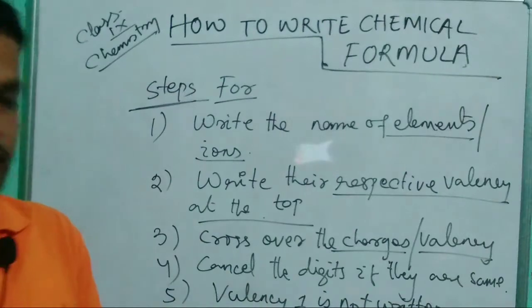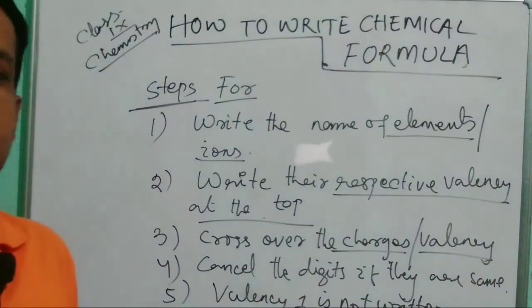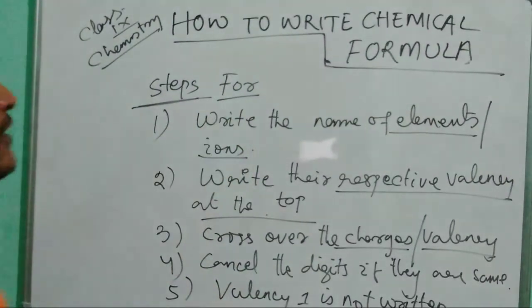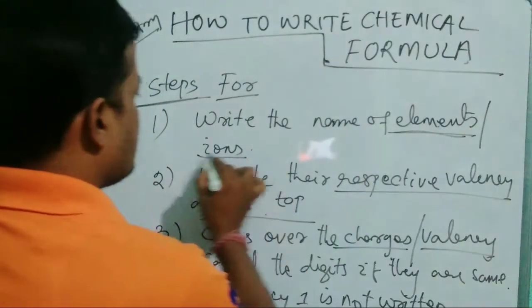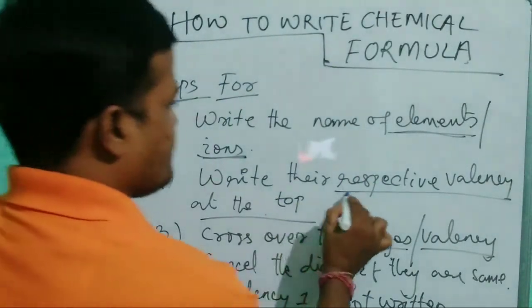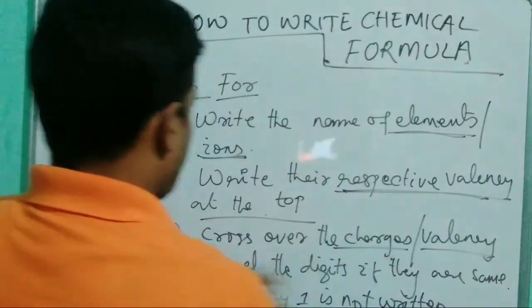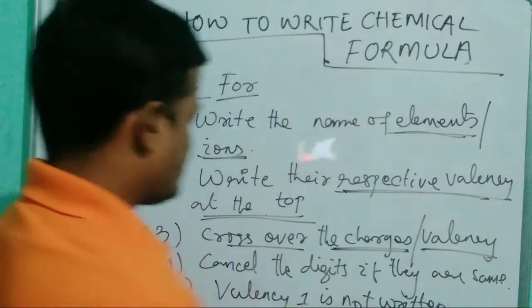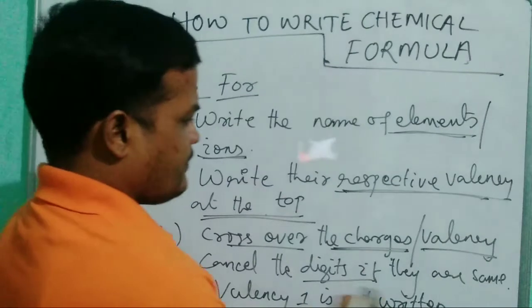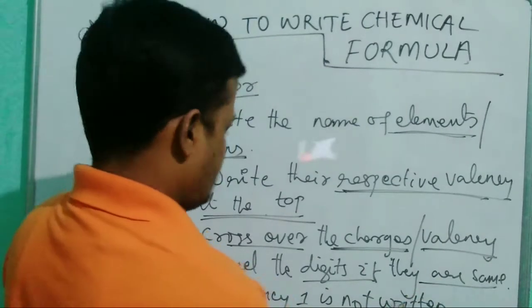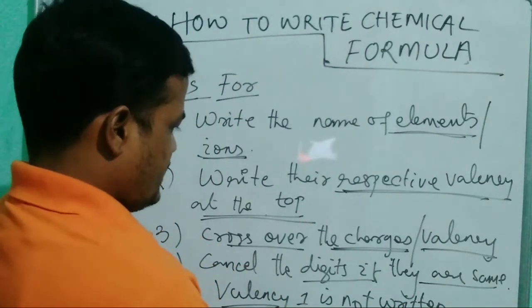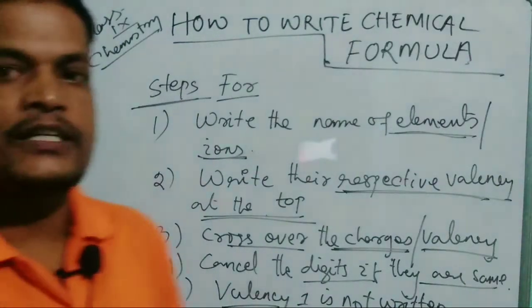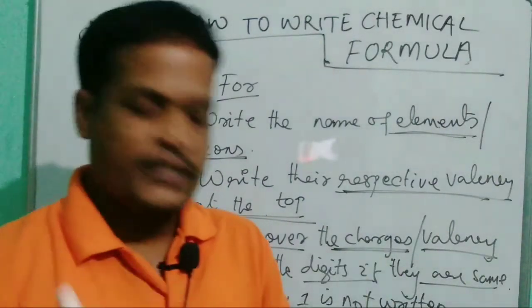So these are the five steps to write a chemical formula. Step one: write the name of elements or ions. Step two: write their respective valency at the top. Step three: cross over the charges or valency. Step four: cancel the digits if they are the same. Step five: valency of one is not written. Let us now write some examples.